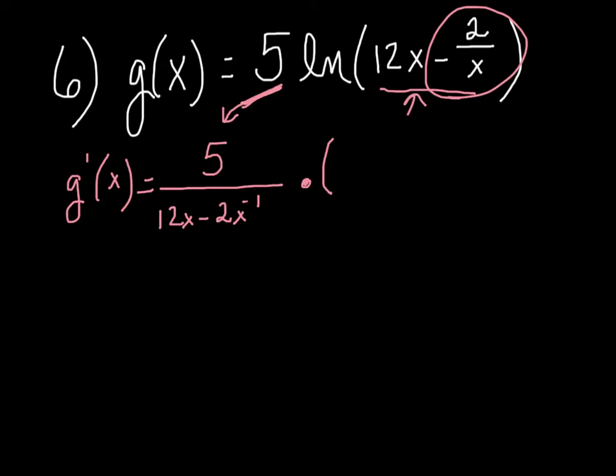But then I know that I need to turn around and multiply by the derivative of 12x minus 2x to the negative 1. And to do that, I'm simply just going to say the derivative of 12x is 12. And then when I'm looking at this, remember this is negative 2x to the negative 1. So that's going to become plus 2x to the negative 2. You may leave it just like that. There's no reason to simplify further.